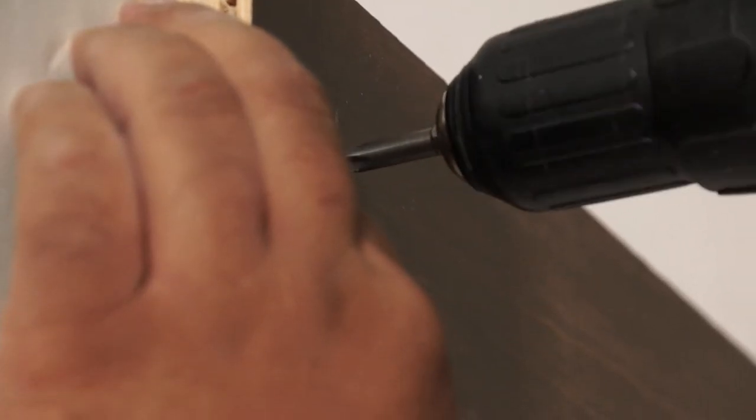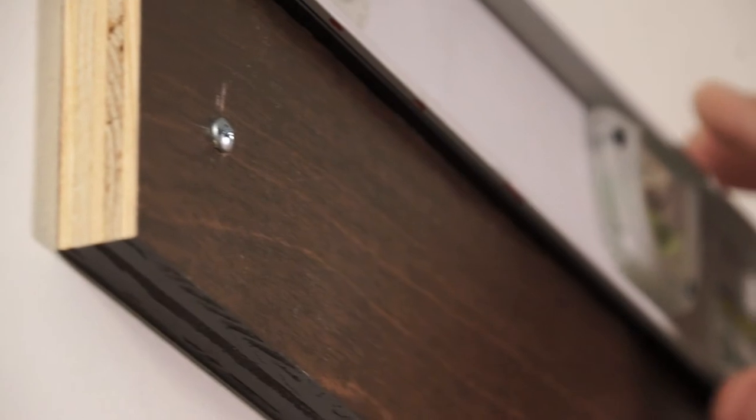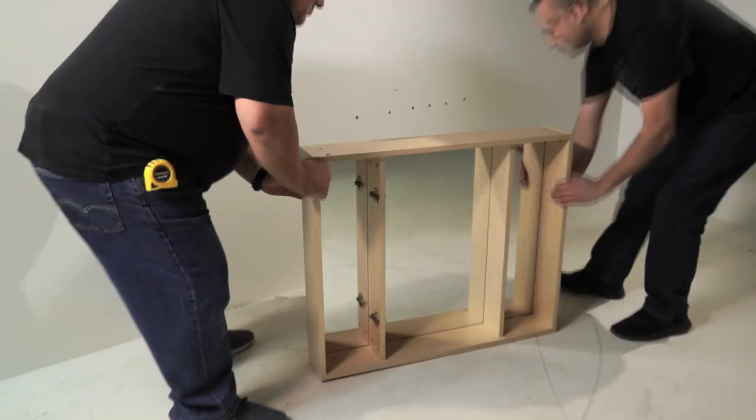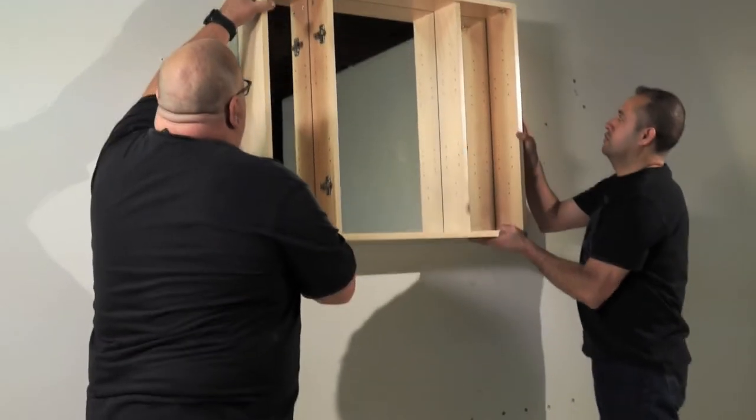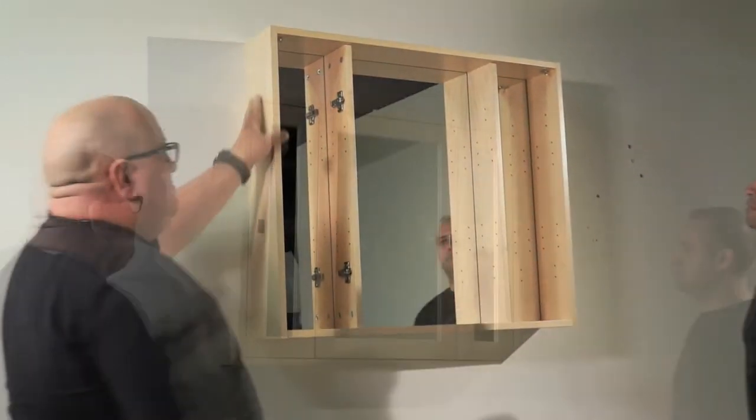Do not bend the mounting bar even if the wall is not perfectly flat. Use shims where necessary. Place the medicine cabinet against the wall and slide down until the medicine cabinet rear stretcher mates with the installed mounting bar.